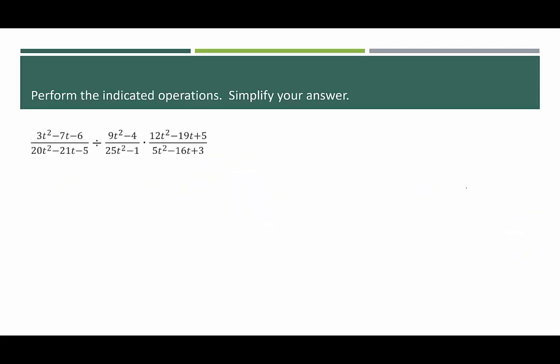How about our last example? If we see division, we're going to rewrite that as multiplication, so that middle term becomes its reciprocal. We're going to multiply by 25t squared minus 1 over 9t squared minus 4. Once I've done that, I'm going to cross that one out and simplify all six numerators and denominators. I moved that division to the end — the commutative property tells me I'm allowed to do that; all the factors are still where they should be.